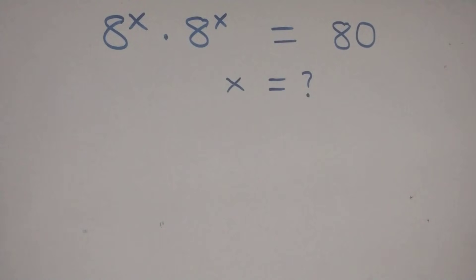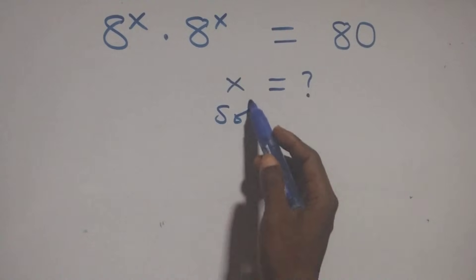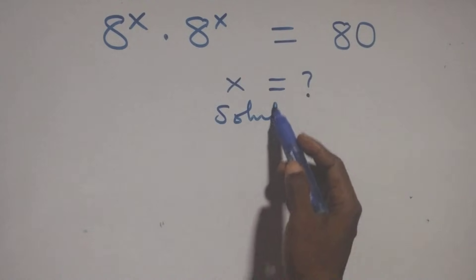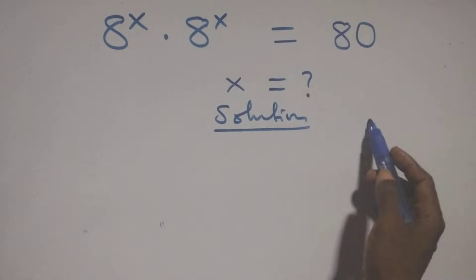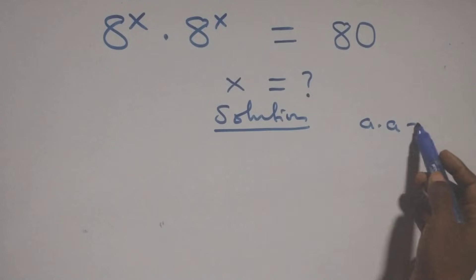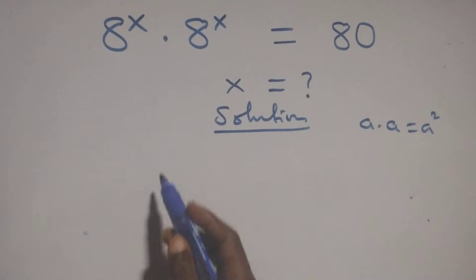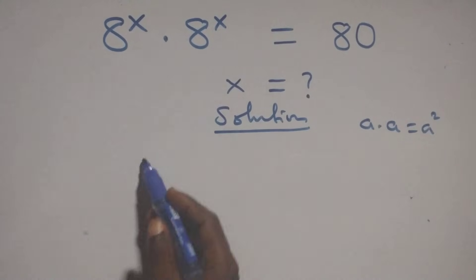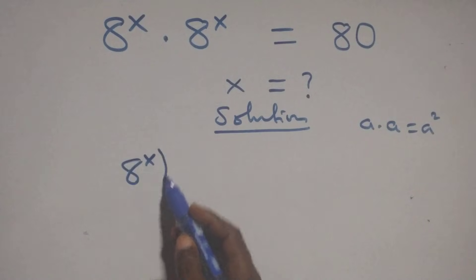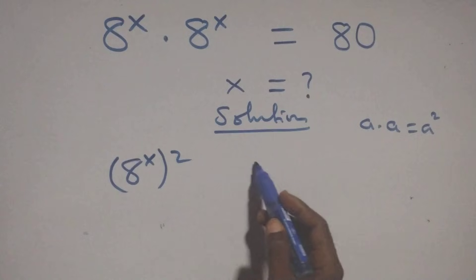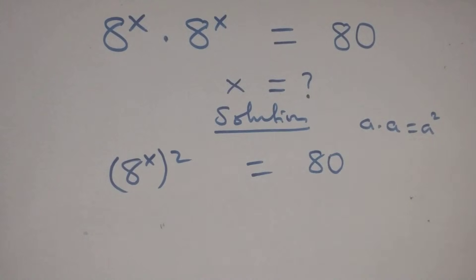Hello, welcome. How to solve this equation. What we have here: this follows the rule that a times a is the same thing as a squared. And this same thing applies here, giving us a raised to the power of 2 squared equals 80.